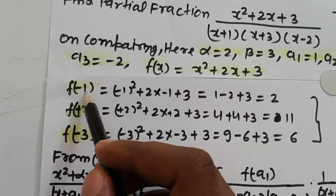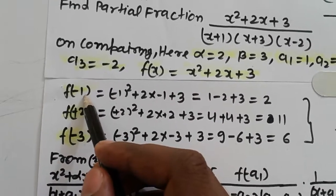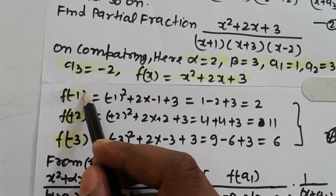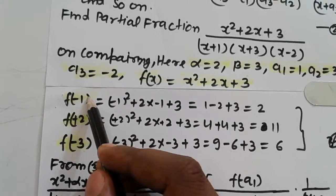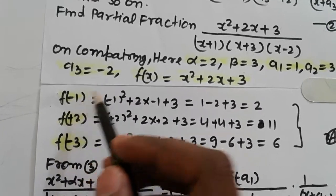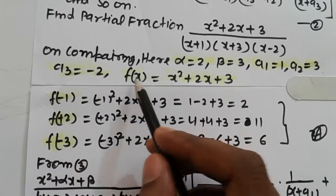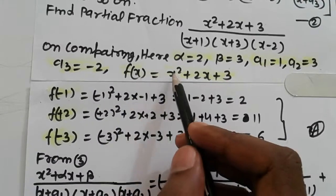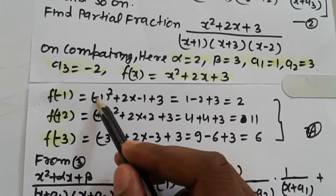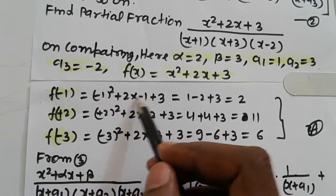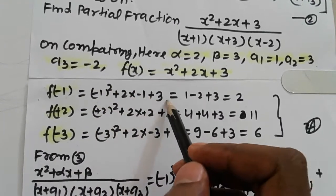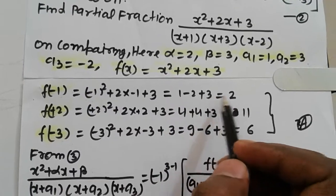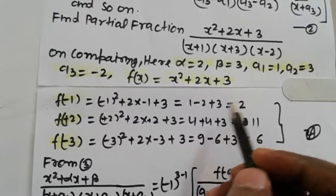Find f of minus a1: since a1 is 1, we compute f of minus 1 by putting x equal to minus 1. So we get minus 1 squared plus 2 times minus 1 plus 3, which simplifies to 1 minus 2 plus 3, giving 2.